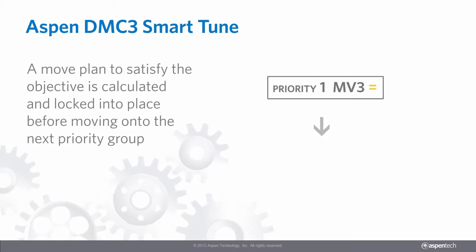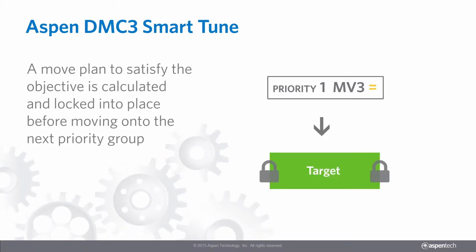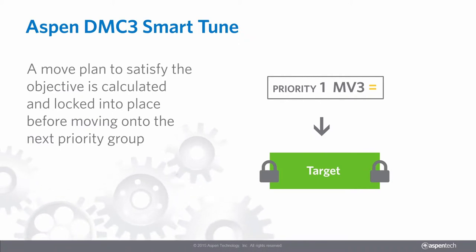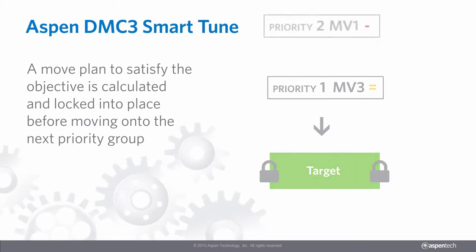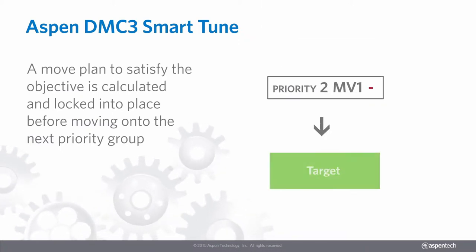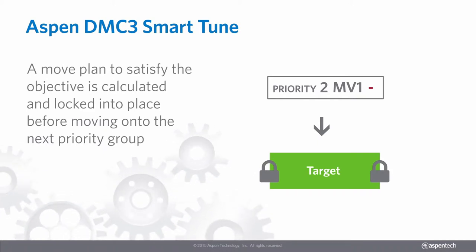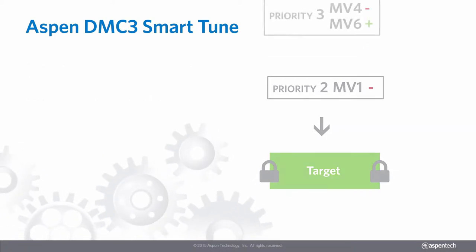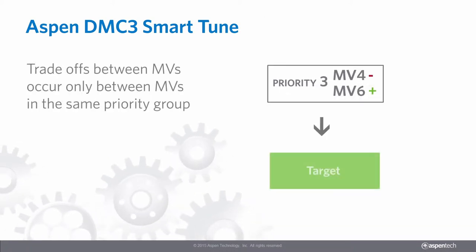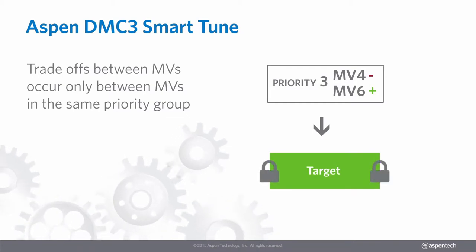Priority groups are optimized sequentially, and targets for MVs in higher priority groups are locked down before the solver moves on to optimize the lower priority groups. Within SmartTune, you can still enter LP costs. For variables within the same priority group, you can use real costs and the engine will optimize accordingly.